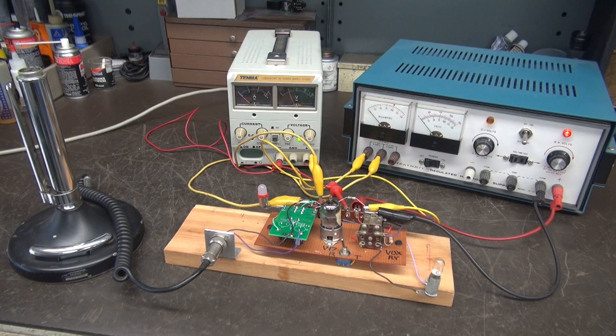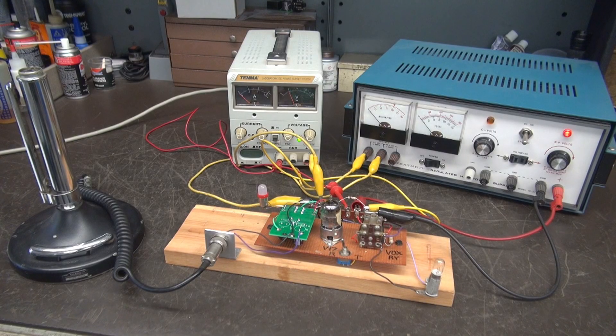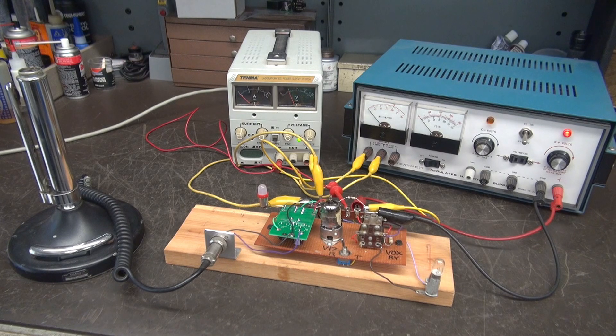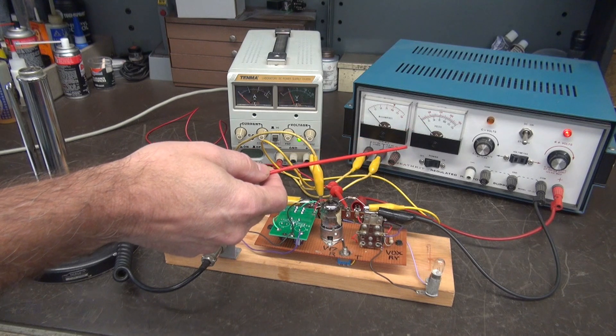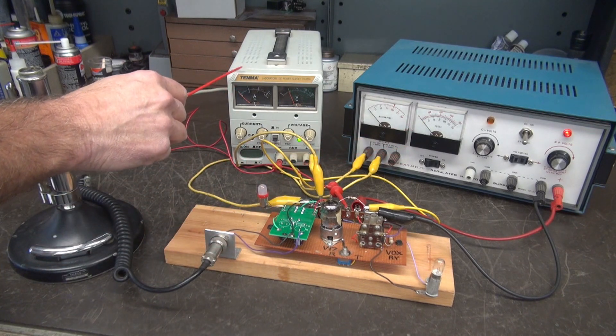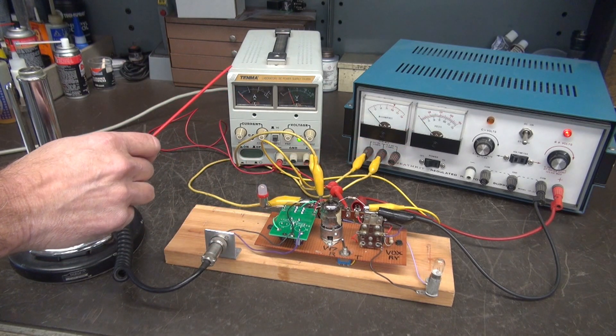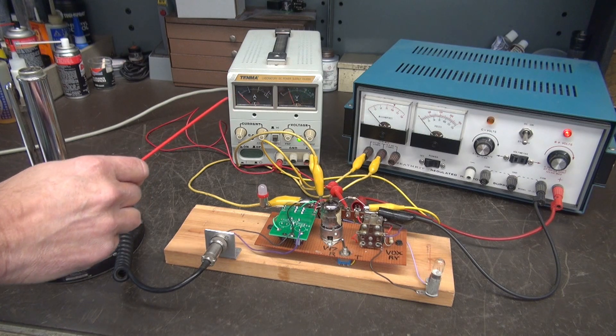Okay, here's my setup to simulate the push-to-talk system in a Helicrafter HT32 transmitter. I've got a Heathkit high voltage power supply. This little power supply is actually being used for negative bias. I'll explain that in a minute.